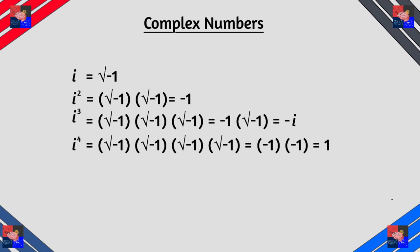i is equals to square root of negative one. i squared is the square root of negative one times the square root of negative one which is equals to negative one.